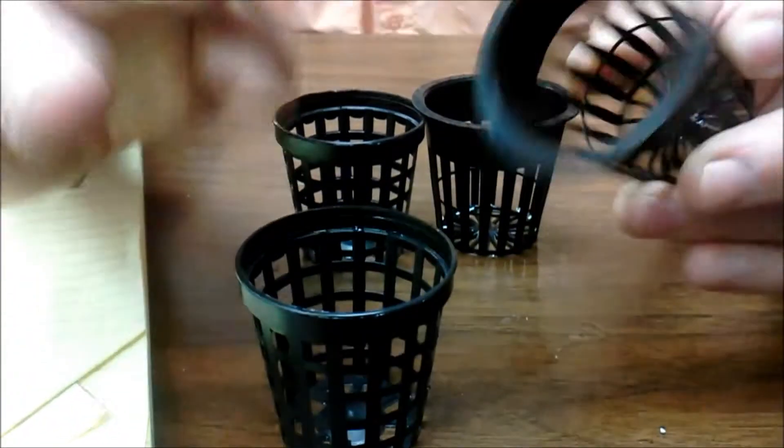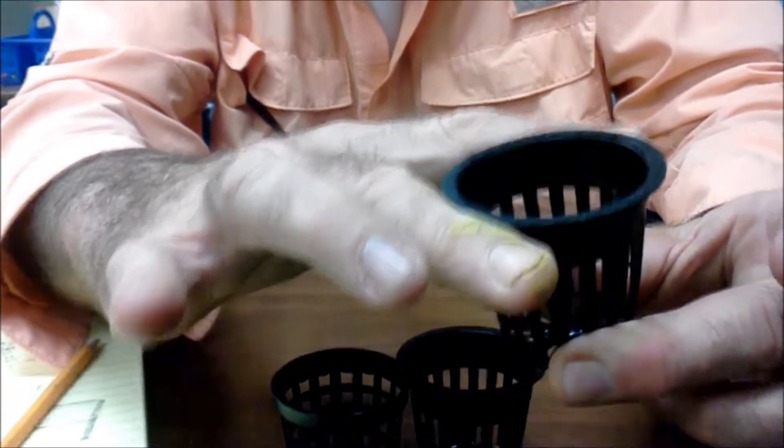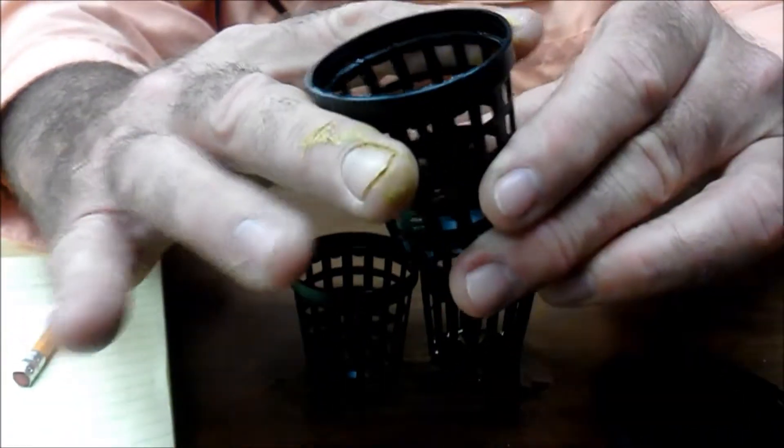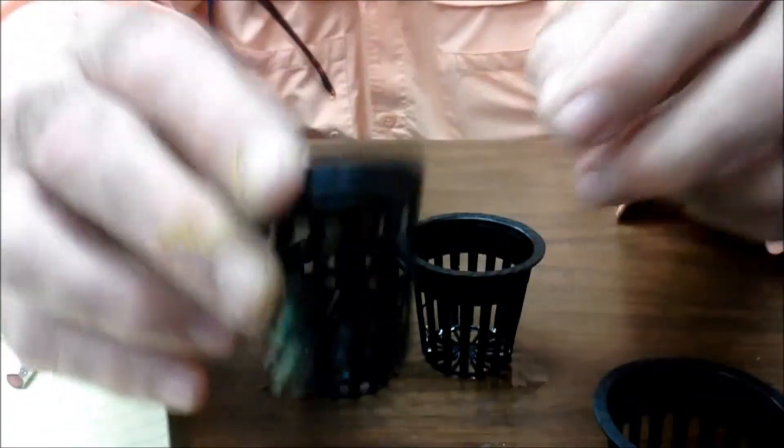The ones with the lips, they kind of hang on the rim of the grow pot, so you get a little bit more rigidity there. These are not so much, and you don't get as much air space around on the bottom.